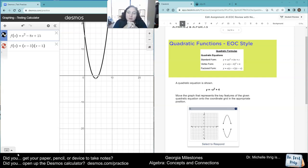It says move the graph that represents the key features of the given quadratic equation in the appropriate position. Guess what we're going to do? We're going to just plug that baby into the graphing calculator, look at our critical points, and match it up.